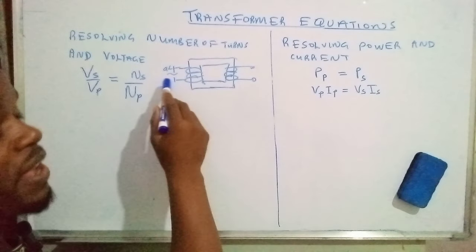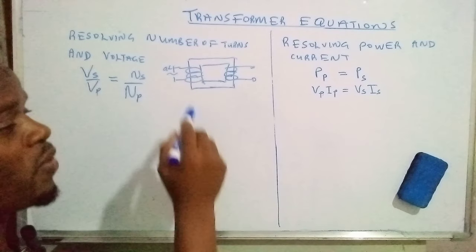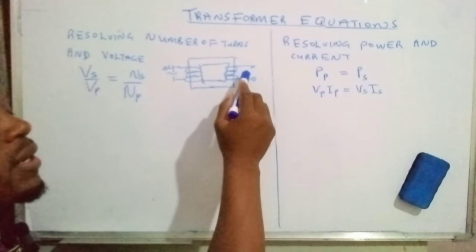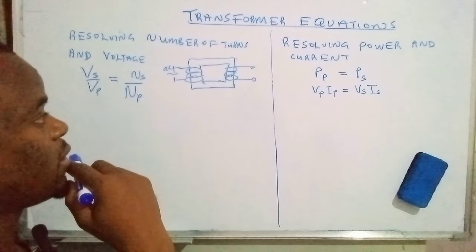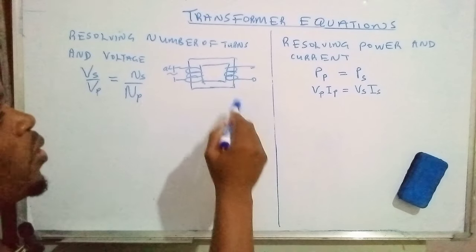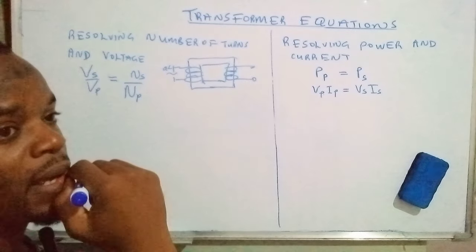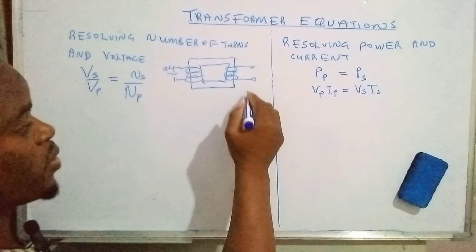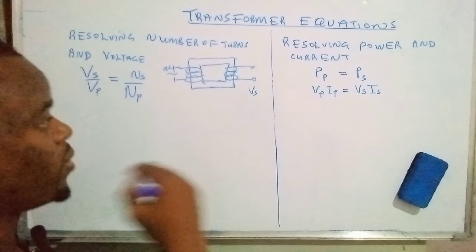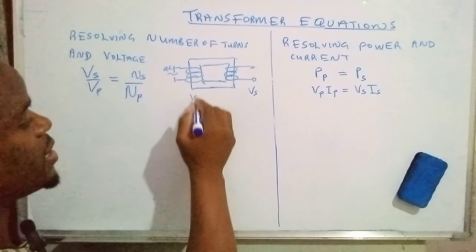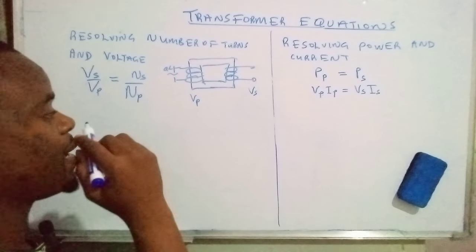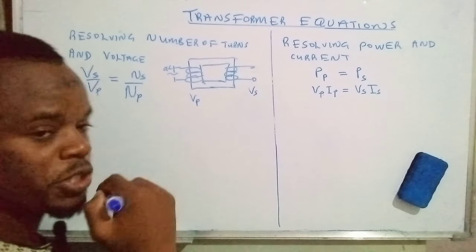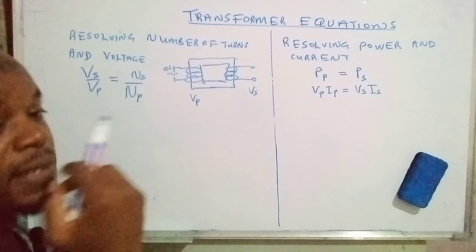This is actually the input side of the transformer — this coil is connected to an alternating voltage source, and this one is connected to the load. So this is the output, this is the input. The voltage across the secondary coil is called the secondary voltage, and this one is called the primary voltage. Secondary voltage is denoted by VS, where the subscript S denotes secondary and V denotes voltage. Similarly, VP denotes primary voltage.